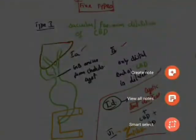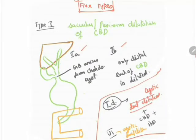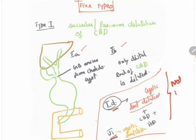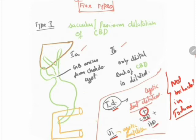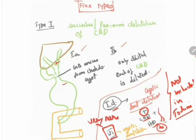There are two additional subtypes debated but not included in the standard Todani classification: type 1D and type 6. Type 1D involves dilatation of the cystic duct in addition to the common bile duct and hepatic duct. Type 1C involves only cystic duct dilatation with a normal common bile duct and hepatic duct. Type 6 is very, very rare.